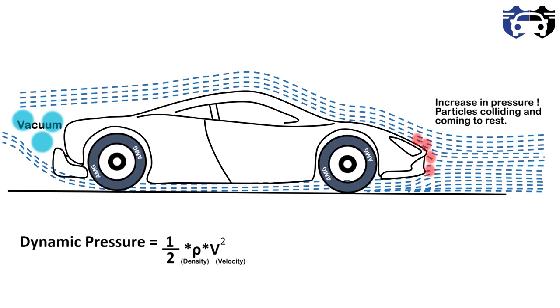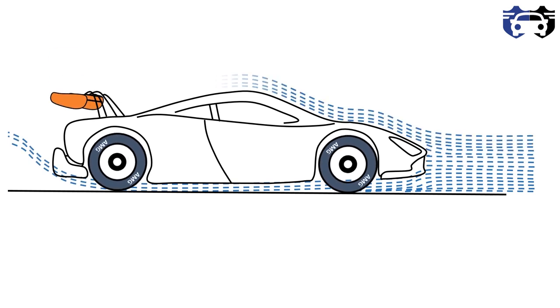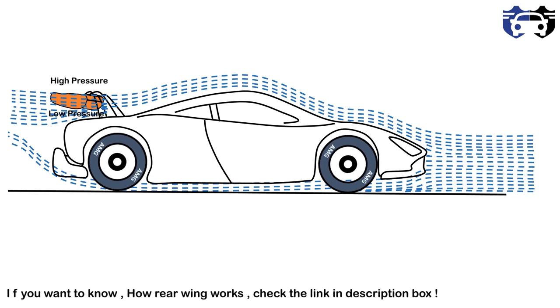So the low pressure at the rear and high pressure in front will cause suction called drag. For the prevention of this, we use the rear wing. Now in this case, we are having a rear wing. This wing will create high pressure at top and low pressure at bottom, generating downforce.